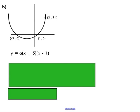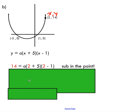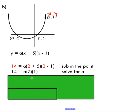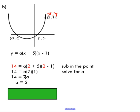I'm going to substitute in my given coordinate of two comma 14. Remember, this is an x comma y, right? So that's very important. I'm going to substitute those in. The two and five I'll add together. I'll subtract one from two and end up with a situation like this. And again, I've got a simple algebra problem where all I have to do is solve for a. So I'm going to divide both sides by seven. I get my a value of two.